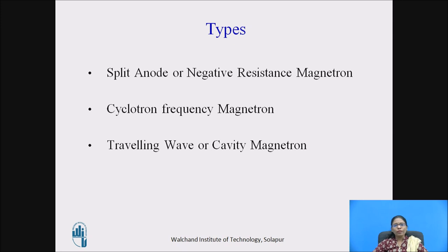Types of magnetrons: the first type is the split anode or negative resistance magnetron. The second is the cyclotron frequency magnetron. The third is the travelling wave or cavity magnetron.